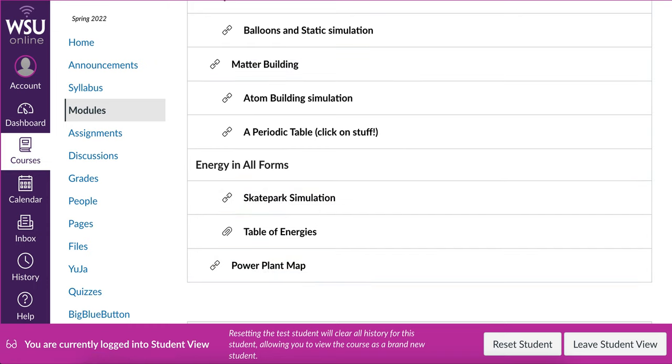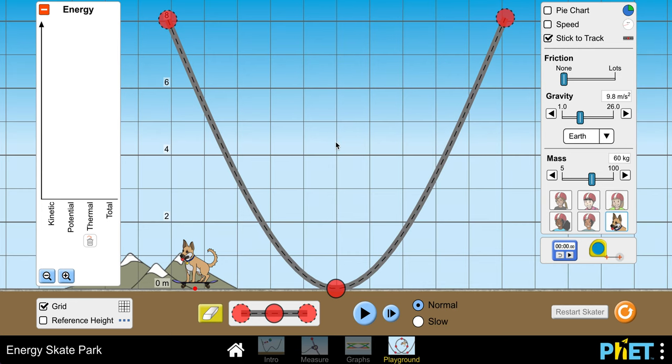So first of all, the skatepark is something that you've seen in class. But I've just set it up here so that we've got the world paused and I can lift our dog into the air. And I've set up a skate track, skatepark, so that I can put Al, the dog, here on the track. I happen to have no friction. I happen to have the dog stuck to the track. These are all defaults and it's a pretty big dog, 60 kilograms.